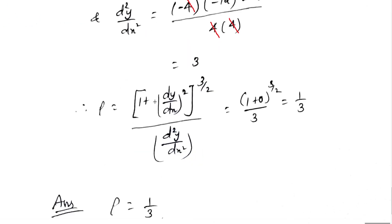Therefore, ρ = [1 + (dy/dx)²]^(3/2) / d²y/dx². With dy/dx = 0 and d²y/dx² = 3: numerator is (1 + 0)^(3/2) = 1, denominator is 3, so ρ = 1/3. Thus, the radius of curvature at both points (1, 2) and (1, -2) is 1/3. This is the final answer.